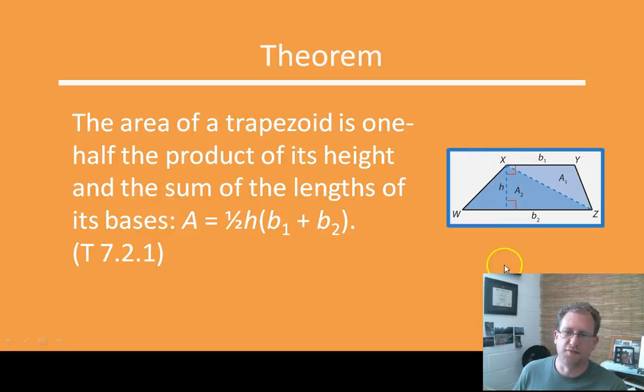So you can also see this as the average of the bases times the height. You can think of it as if you're doing a rectangle, base times height, but the rectangle can't decide how long the base is. And so you average out the two bases and then multiply by the height. If that helps you, great. If it doesn't help you, then the formula is one-half times the height times the sum of the bases. But that's the way I think of it. It's the average of the bases times the height.